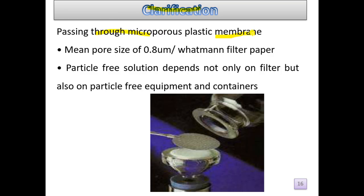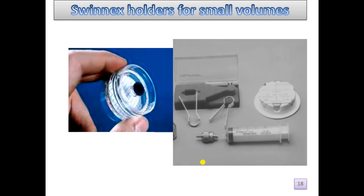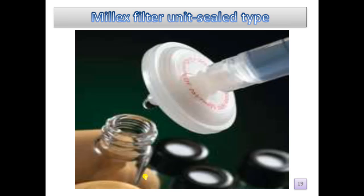Next is clarification, done by passing the solution through a microporous plastic membrane. As seen in the picture, the mean pore size is 0.8 micrometers. A particle-free solution depends not only on the filter but also on filter-free equipment and containers. After clarification, sterilization is performed in an autoclave at 98 to 100 degrees centigrade for 30 minutes. Filtration is done through a membrane of the specified pore size and diameter. Syringe holders for small volumes and the Millex filter unit (seal type) are examples of filter units used.